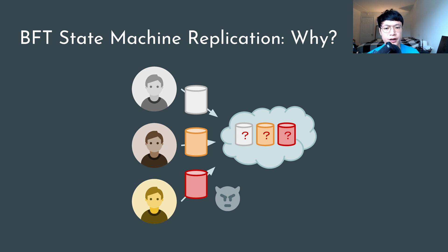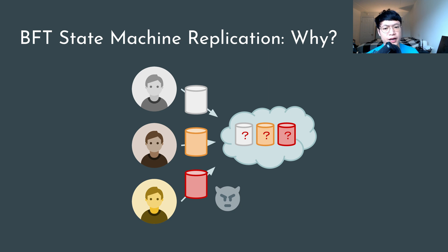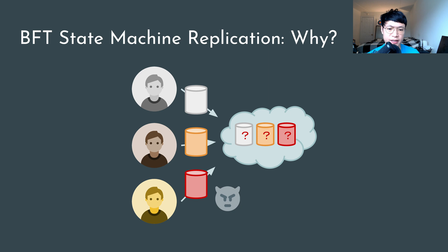Therefore, the key to supporting such a system is to ensure the honest players will still see a local ledger that is replicated and grows consistently with others. Moreover, they have to make sure even if there are malicious nodes among them, without knowing who, as long as the adversary stays below a certain threshold, the honest majority will have consistent states.